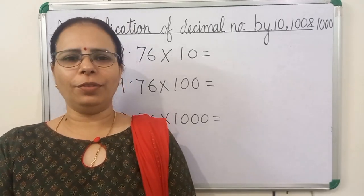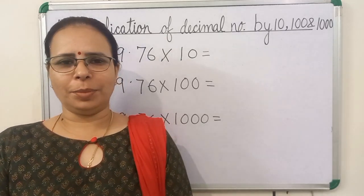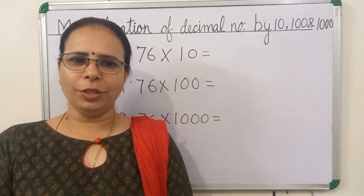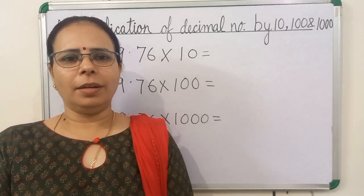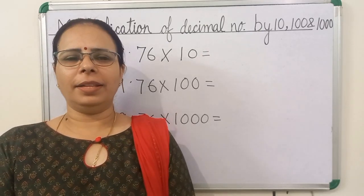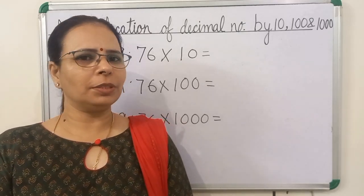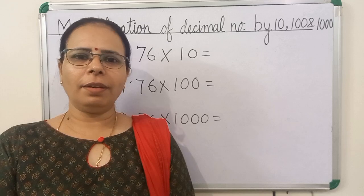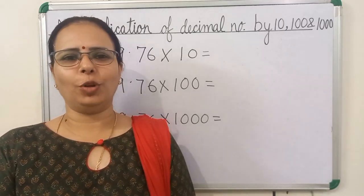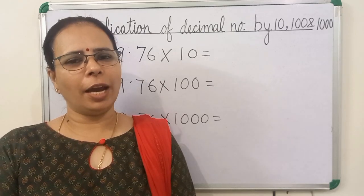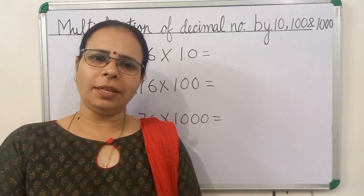Hello everyone. Today, we will cover the topic multiplication of decimal numbers. In this video, we will multiply decimal numbers by 10, 100, and 1000. We can multiply decimal numbers by 10, 100, and 1000 orally — we only have to understand where to put the decimal point. Let's see an example.